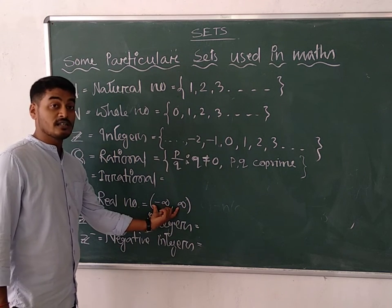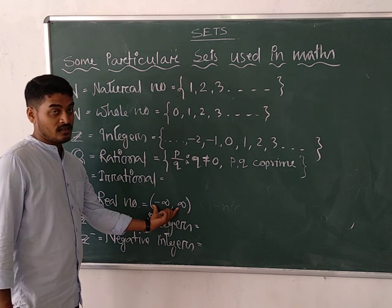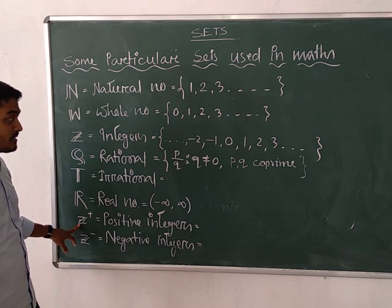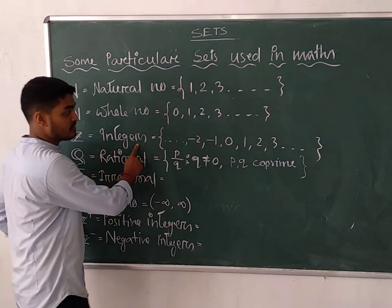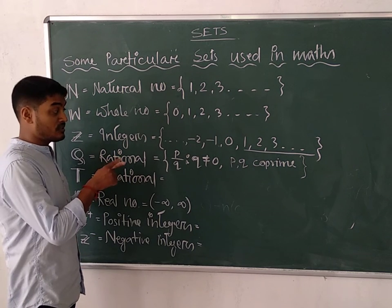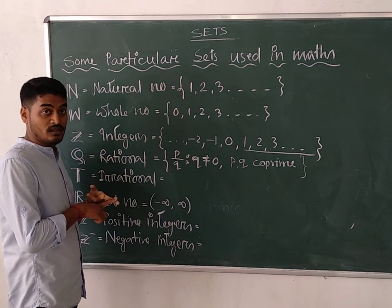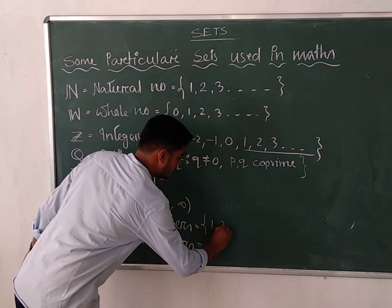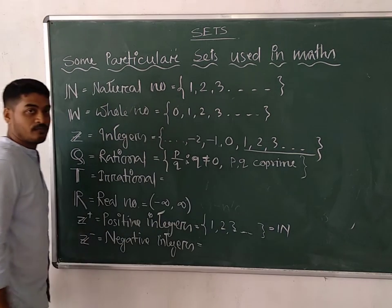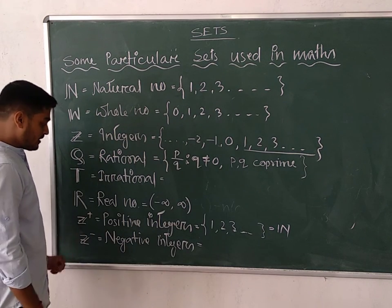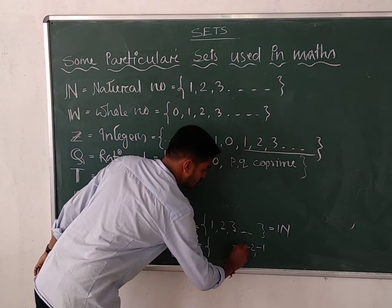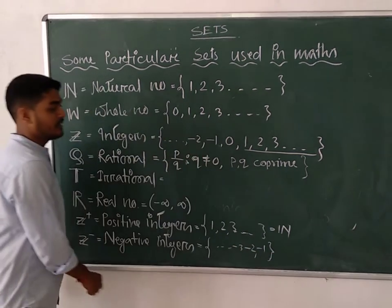Z plus represents positive integers. From 1 to infinity, positive integers form the set of positive integers. You are not supposed to include zero, because zero is neither positive nor negative. So the set of positive integers is nothing but the set of natural numbers. And non-negative integers — from minus 1, minus 2, minus 3, up to minus infinity — is the set of negative integers.